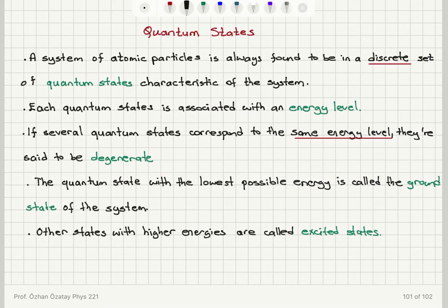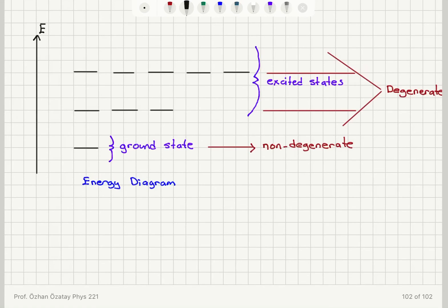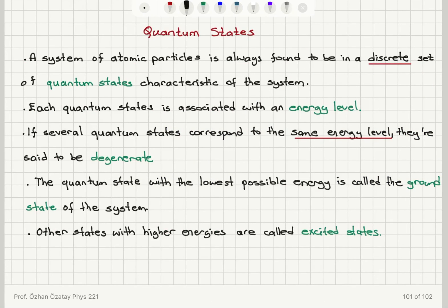So let's summarize what we said. We're trying to specify the state of the system. In our statistical mechanics arguments, we have to have a specification of the state of the system. For the system of atomic particles, we find them always in a discrete set of states — not continuous. We call them quantum states; that's characteristic of the system. There is an energy level that corresponds to each of these quantum states, so I can call these energy levels E0, E1, E2, etc. If I find that there is more than one quantum state that corresponds to the same energy level, I call those states degenerate.